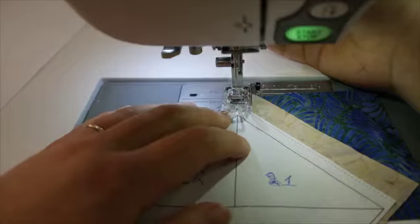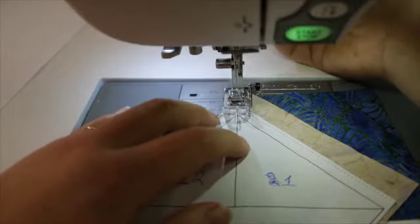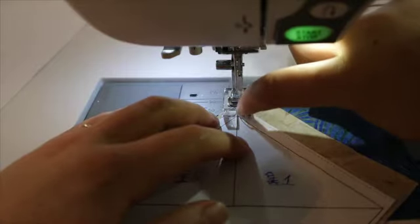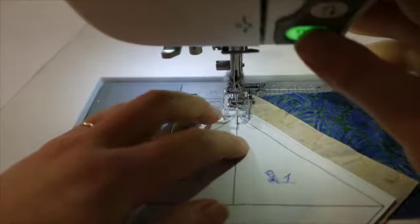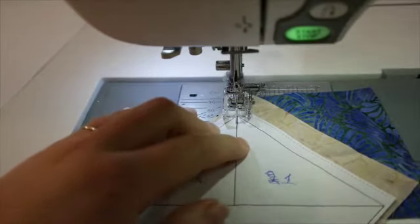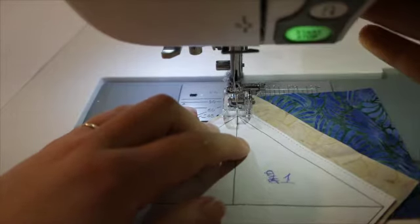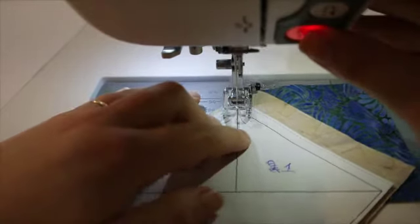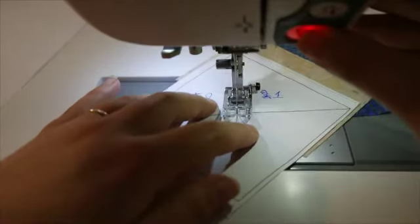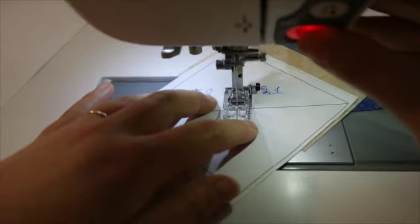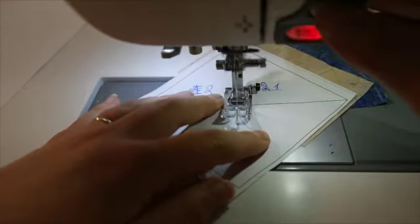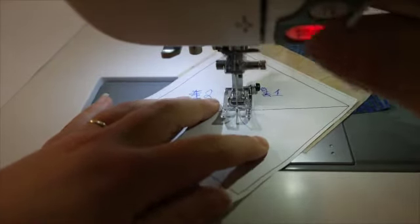And I like to use just a regular A foot. My A foot has a nice valley right here, and this is what I lay my line in. I'm going to put my needle down. And I'm just going to sew down until I get to the line. If you go over, no big deal. And I like to do a little back stitch just to hold it.